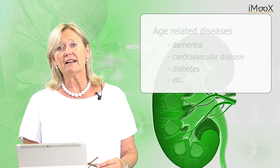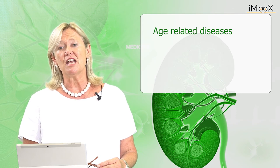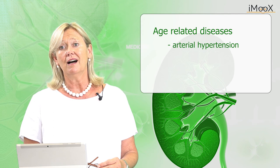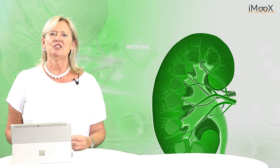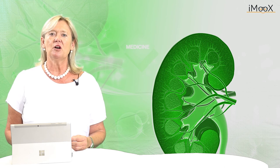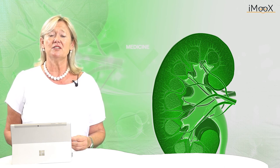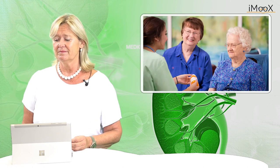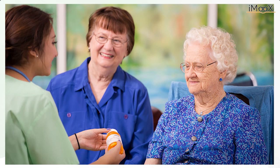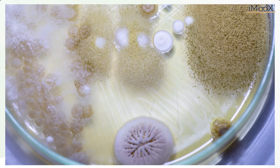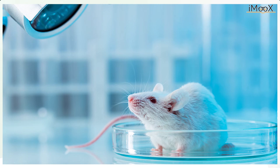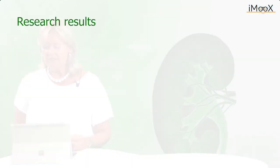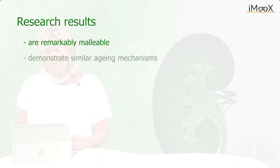Researchers were also able to connect gene variants with risk factors associated with age-related diseases such as arterial hypertension, high blood glucose, high blood cholesterol or bone mineral density. Two lines of research strongly suggest that the compression of the time of disease and the severity of disease during ageing is physiologically feasible. One is the study of long life and compression of late life morbidity in centenarian studies. The other is using the ageing process across yeast, nematode worms, fruit flies and up to mice to test ageing hypotheses. Both strands of research deliver results that are remarkably malleable and demonstrate similar ageing mechanisms.